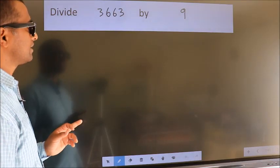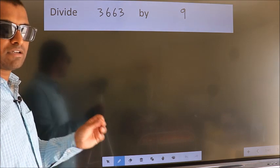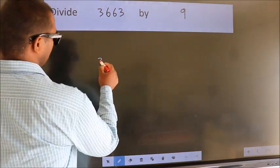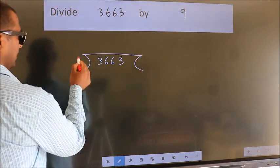Divide 3663 by 9. To do this division, we should frame it in this way. 3663 here, nine here.